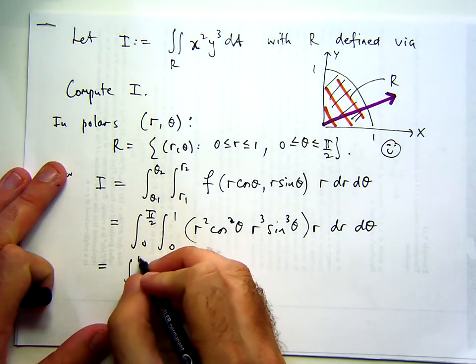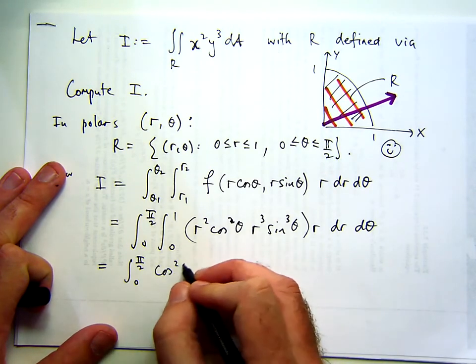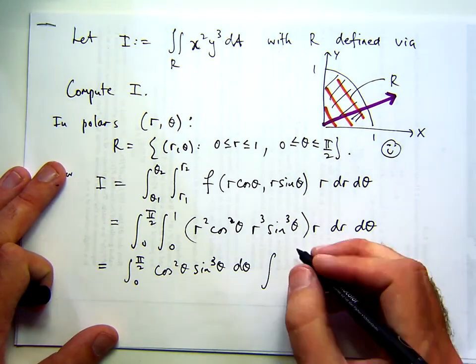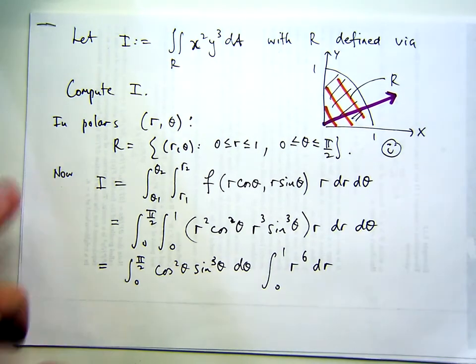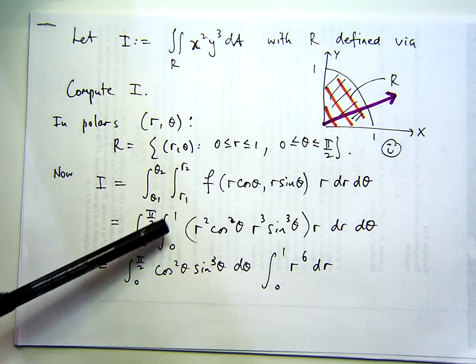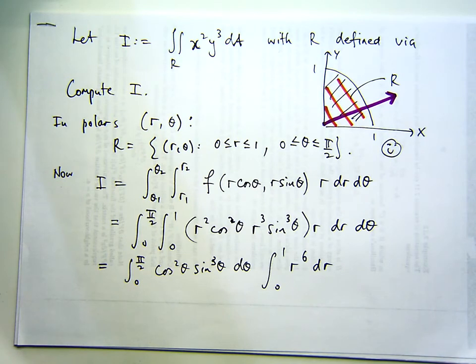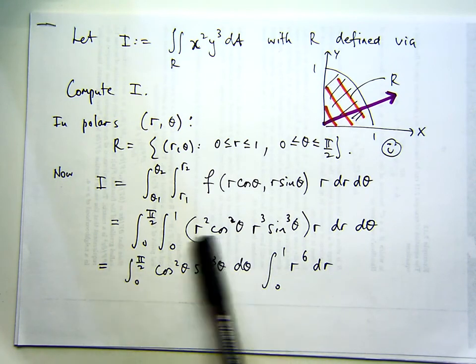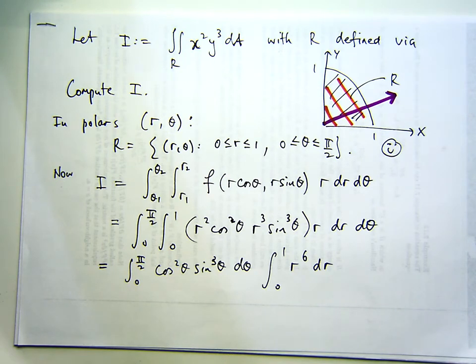So what I can do is I can group all those r's together, I can group all the thetas together and just get single integrals. So I'll have cos squared sine cubed d theta times r to the sixth dr. Now let me give you a check here: one of the important things is the limits of integration have to be constant, they can't be functions. So you can't do this for everything, but when the limits of integrations are constant and it's a function of one variable times a function of the other variable, you can split that double integral. Well then we know what that's going to be: that's going to be one seventh. So it's just a matter of integrating this.